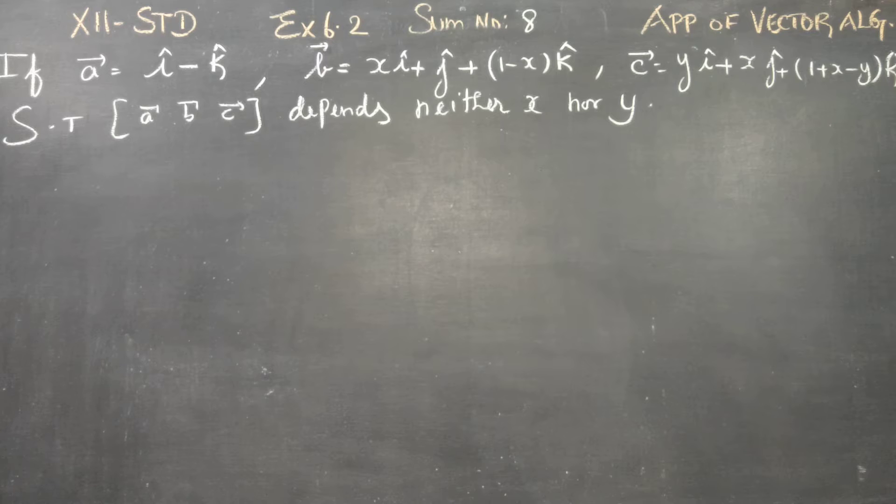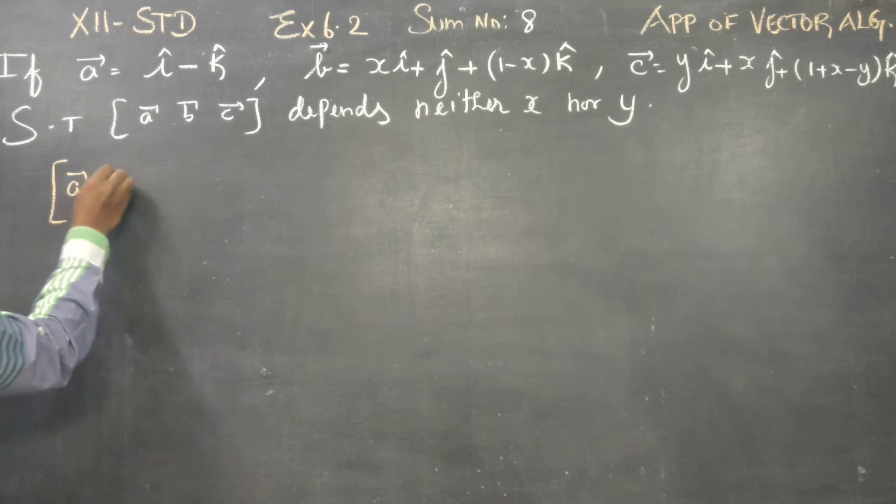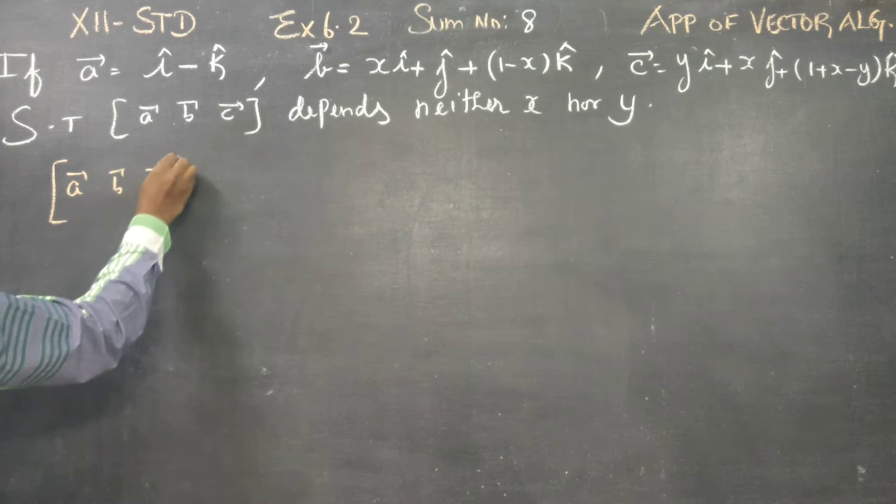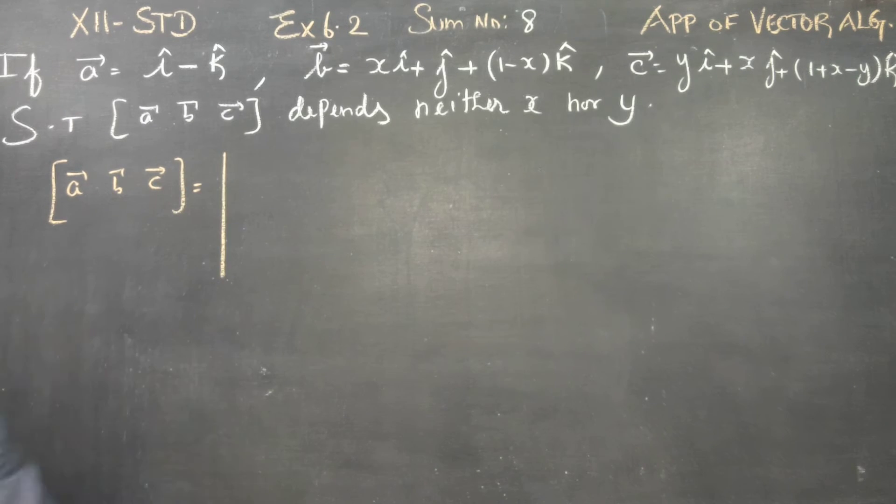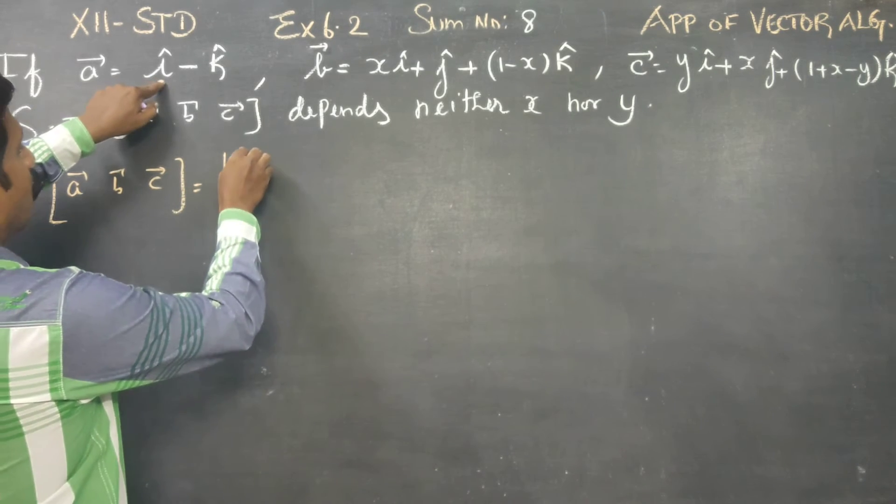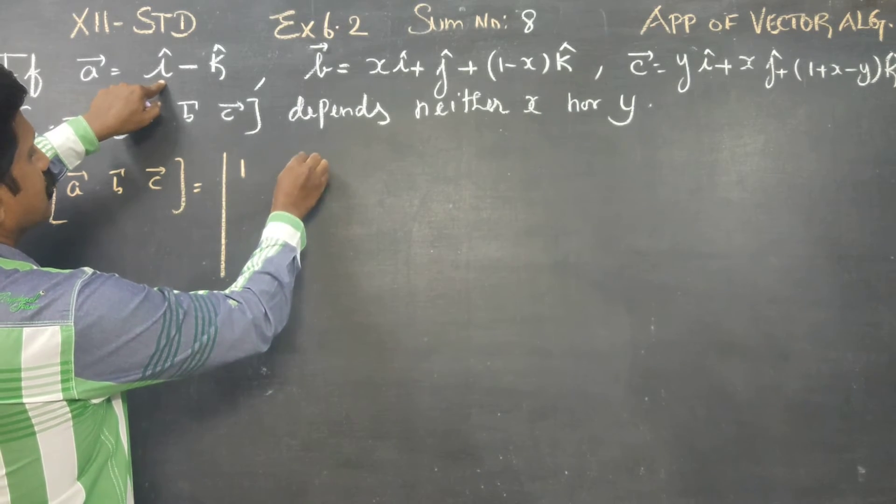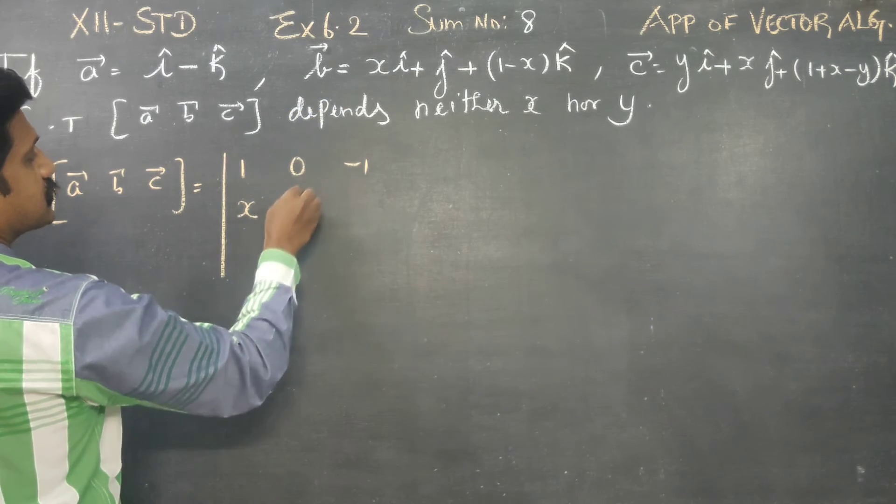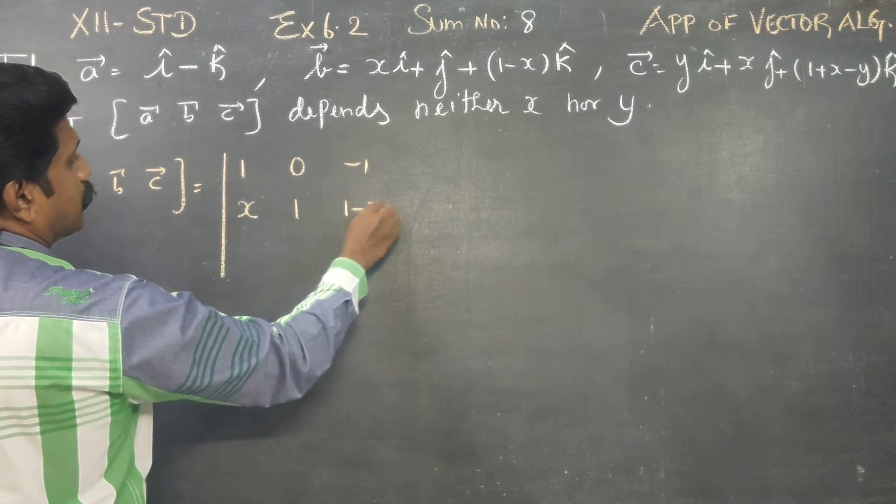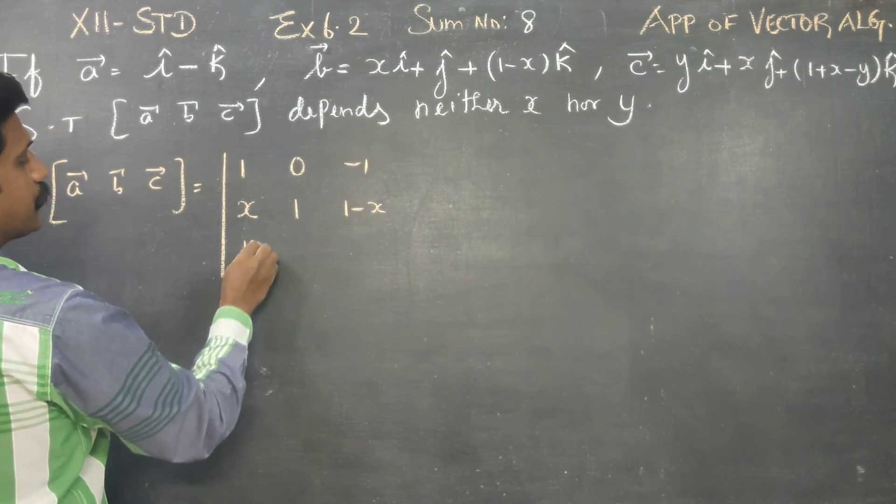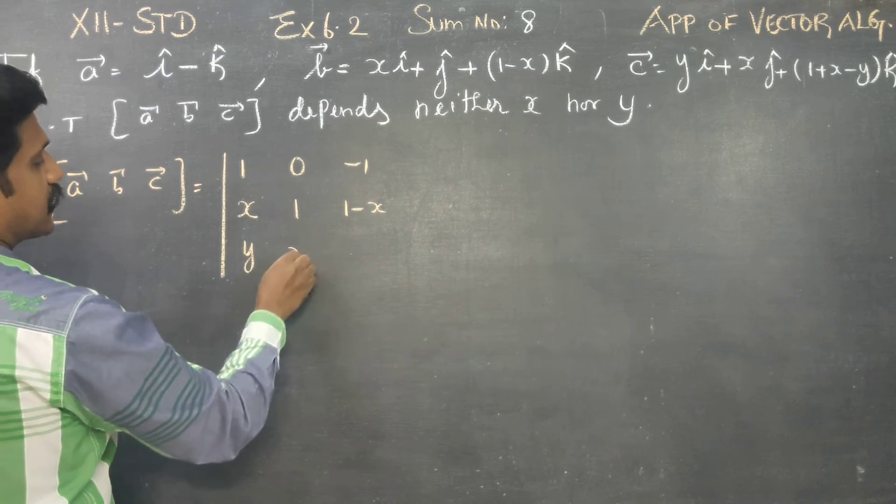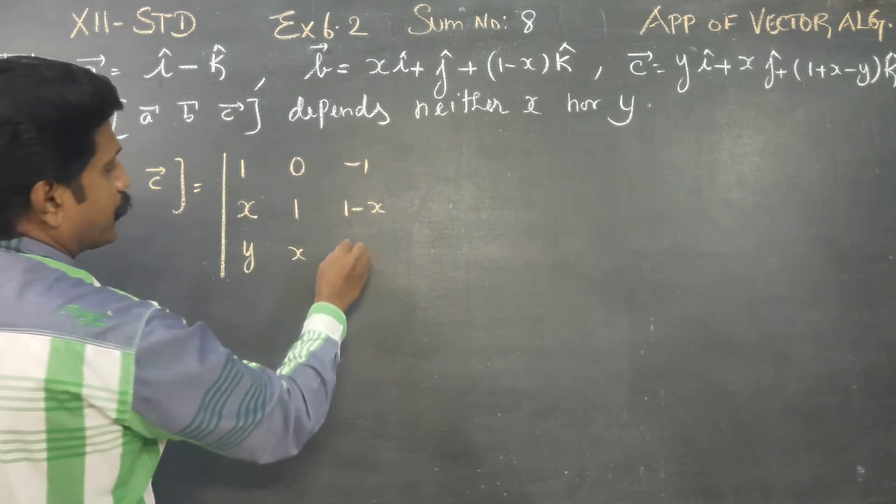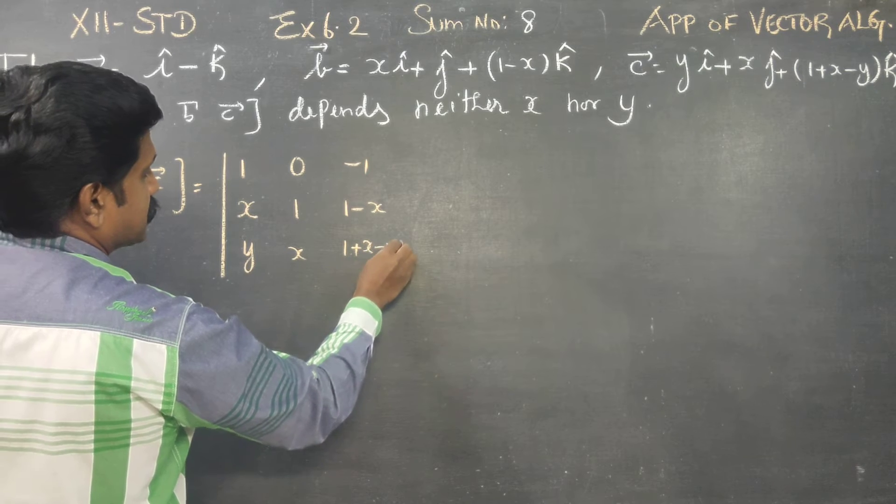We shall start with our box product A, B, C. My box product determinant will be: i cap, 1, j cap, 0, k cap, -1 in the first row. The i component is x, 1, 1 minus x. Second row is y, x, and the k component is 1 plus x minus y.